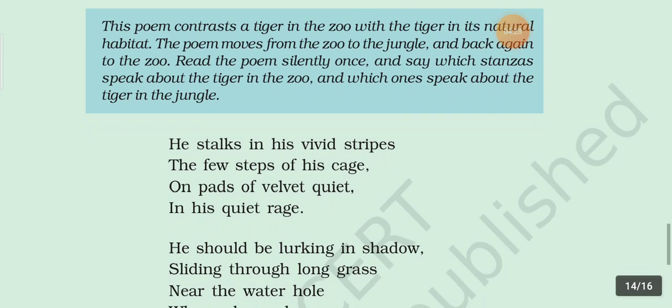Now rhyme scheme. In the first stanza, the first line is given A because there is no common rhyming word. Second line is B. Third line, 'on pads of velvet quiet,' has no common rhyming word, so C. The fourth line, 'in his quiet rage' — 'cage' and 'rage' have the same sound, so it is also B. So the rhyme scheme is ABCB. The whole poem is written in the same rhyme scheme: ABCB.